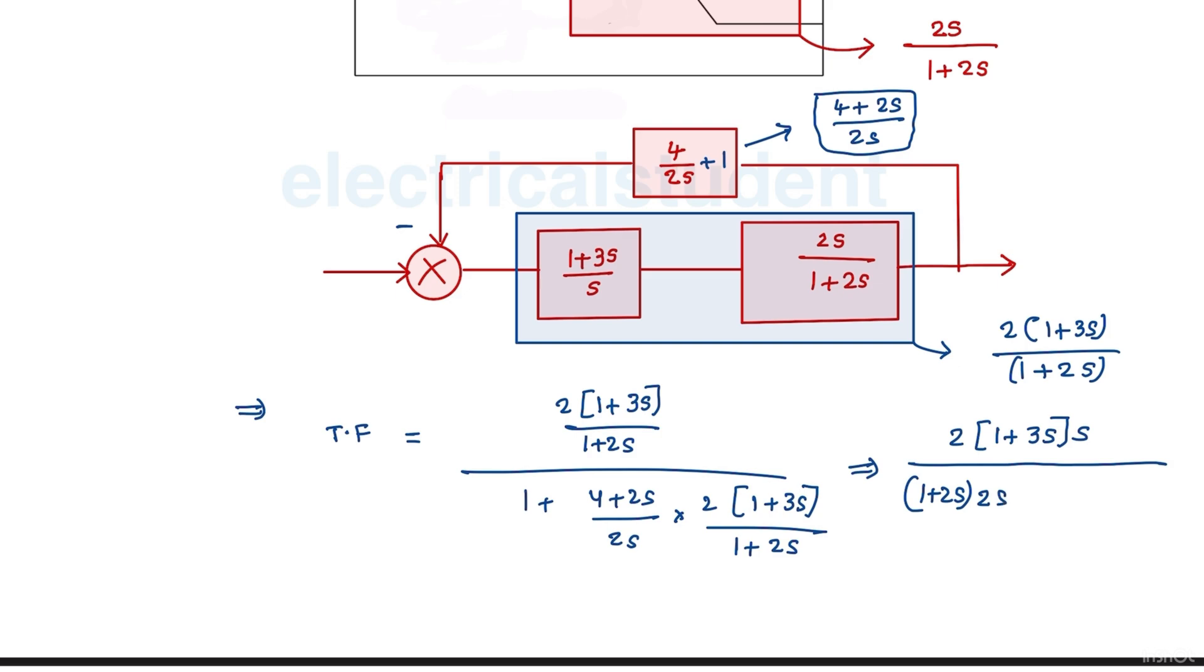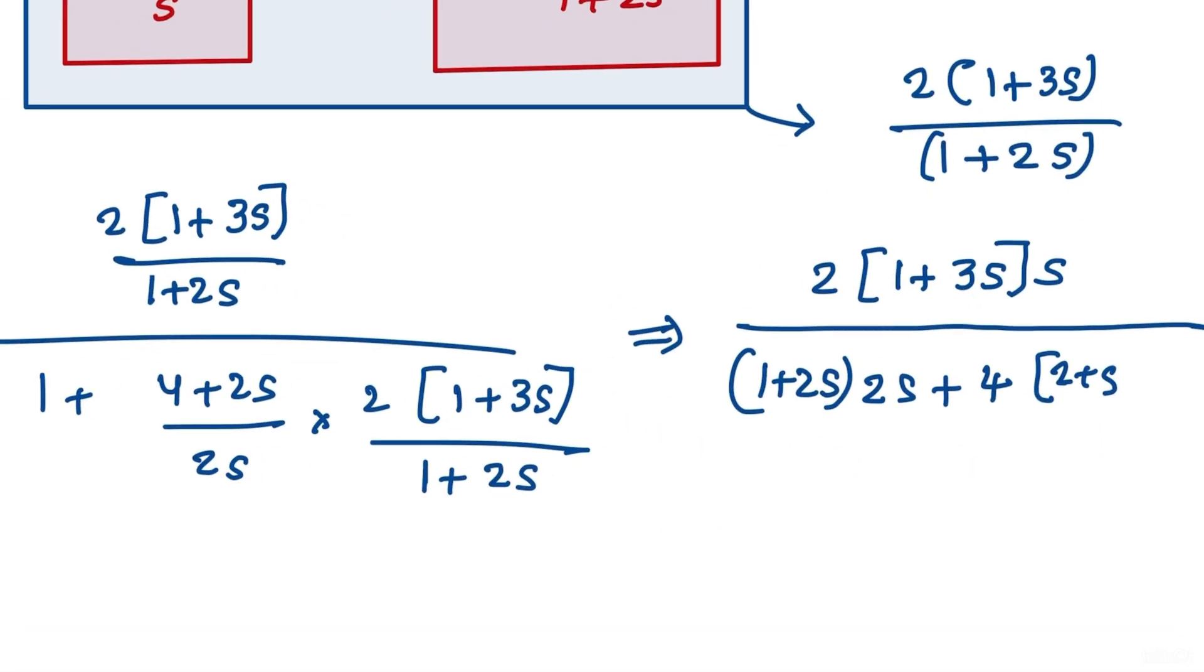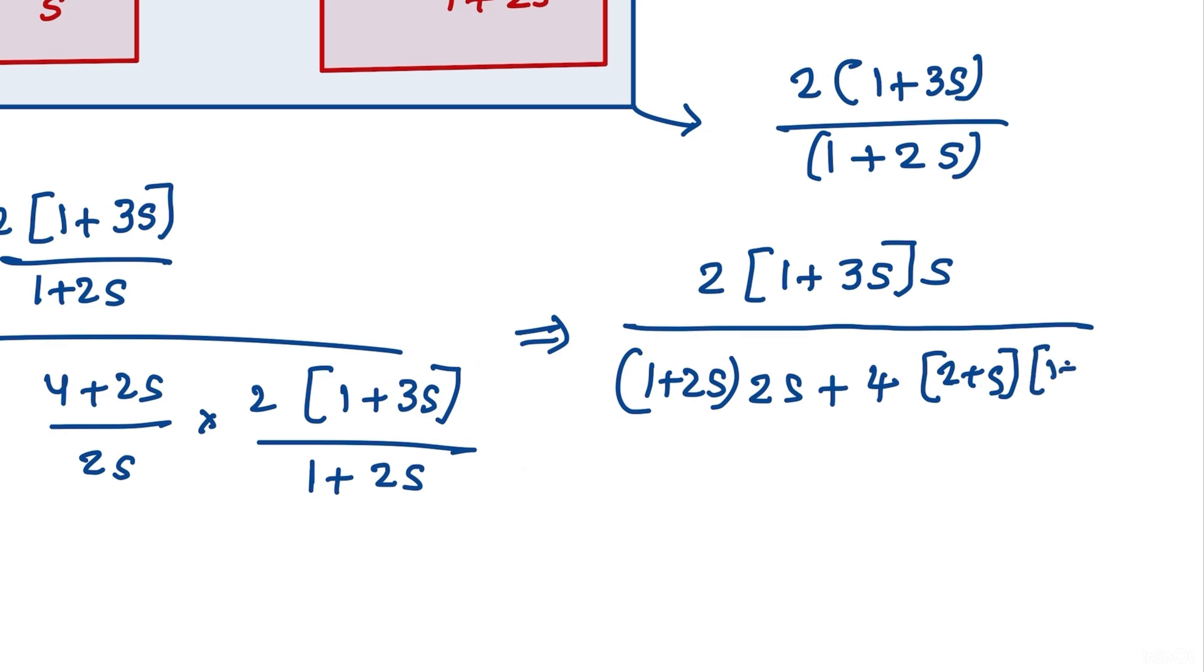So the final equivalent transfer function looks something like this: 1 plus 2s, and this is 2s plus, this is 4 times 1 plus 2s. This is sorry, this is 2 plus s.